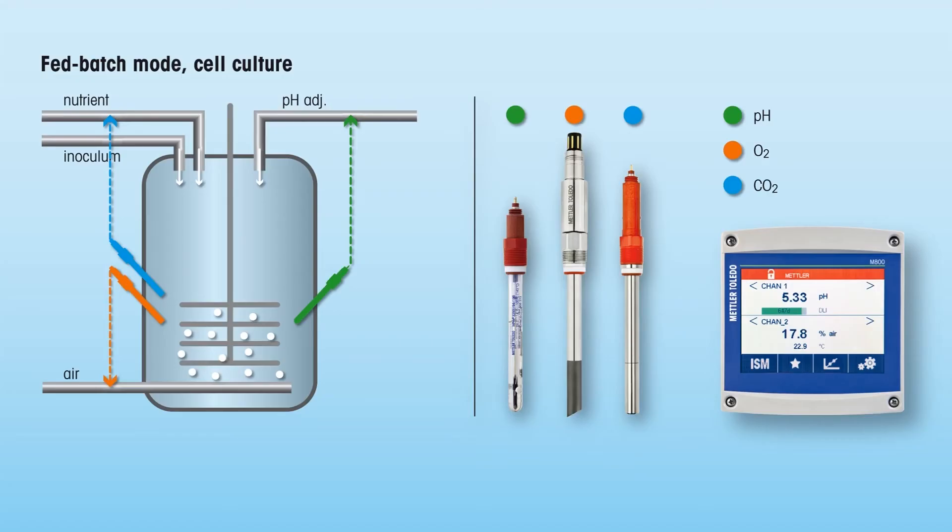Inline dissolved CO2, together with pH and dissolved oxygen measurements, provide the real-time, continuous data necessary for an efficient control strategy, leading to improved process yield and final product quality.